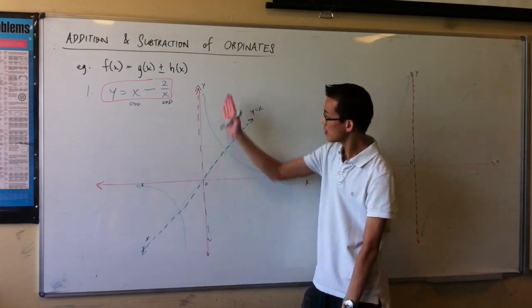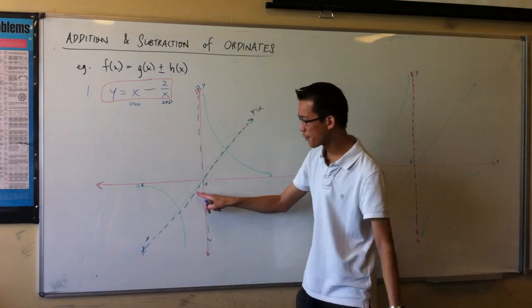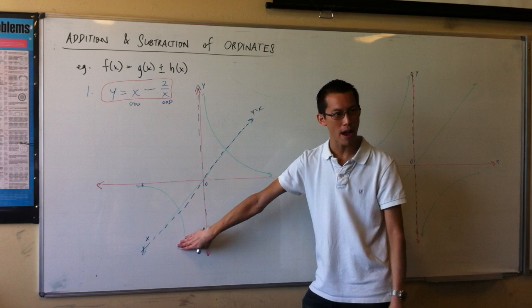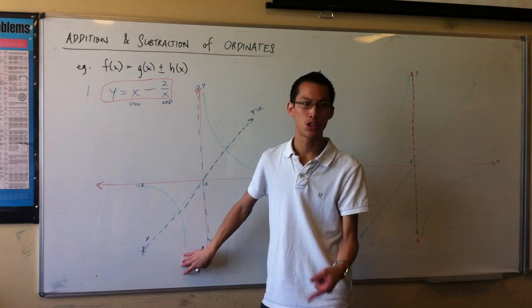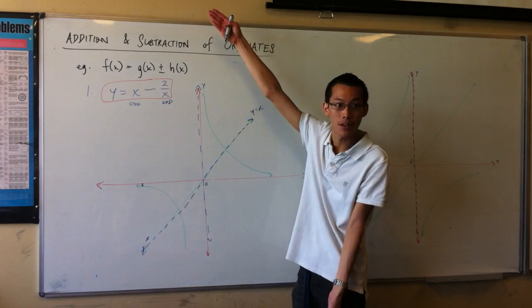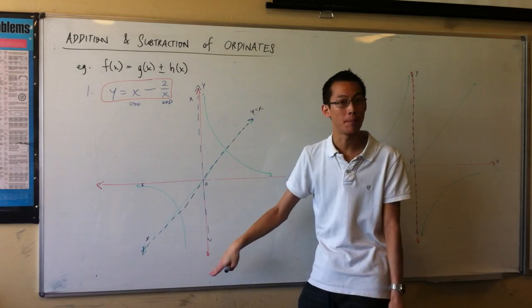Now, as I progress towards the right, towards this vertical asymptote, what's happening? I've got this line here, and I'm subtracting a very big negative. Think about that. Subtracting a big negative, which is the same as adding a big positive. So I'm going to be skyrocketing up towards the asymptote at the top instead of at the bottom.